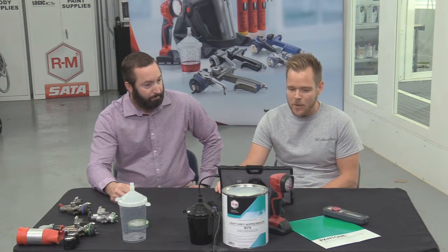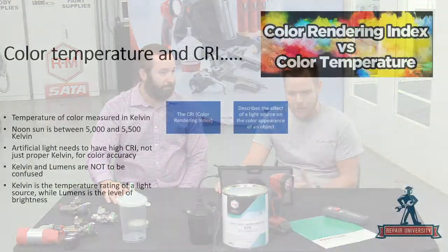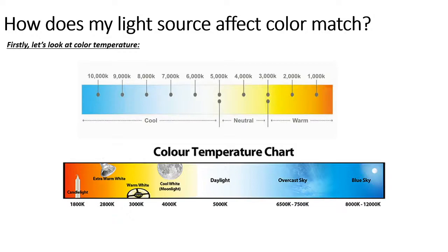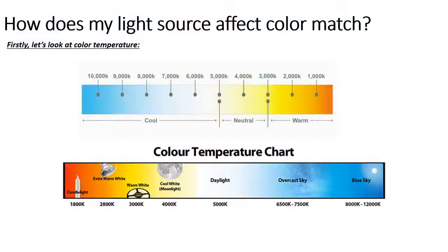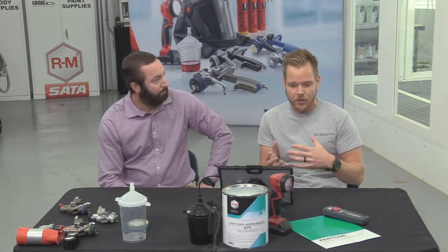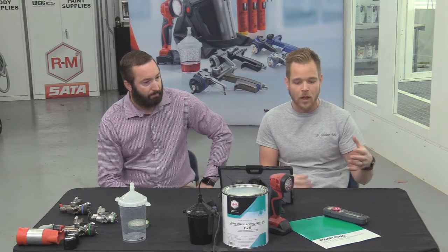A big part of color matching is how we see color as human beings. We have a light source, and within that we have light temperature. The Kelvin rating goes from 1,000 all the way up to 10,000. At 1,000 — warm light — you get an orange-yellow cast from incandescent bulbs. Depending on the lighting in your shop, you'll have different Kelvin ratings ranging from warm to cool.